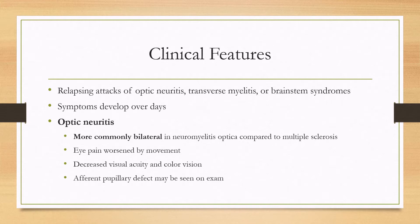For optic neuritis, it's typically more commonly bilateral in NMO than in multiple sclerosis. Symptoms can include eye pain that's worsened by movement, decreased visual acuity, and decreased color vision, and an afferent pupillary defect may be seen on exam.